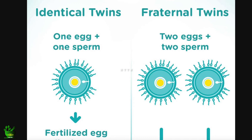There are two types of twin pregnancy: number one is identical twins, and the other is fraternal twins. I would like you to understand the basic difference between these two. Identical twins are formed when there is one mother's egg and one father's sperm — so one egg and one sperm.